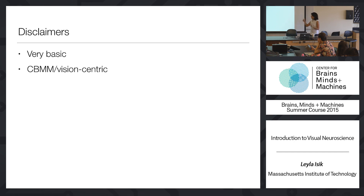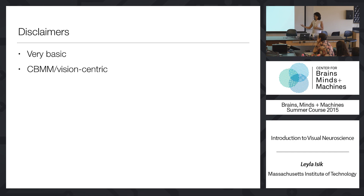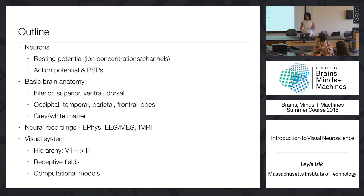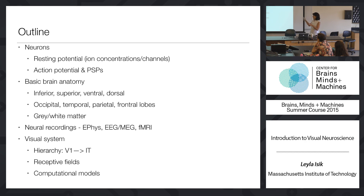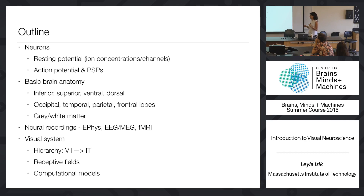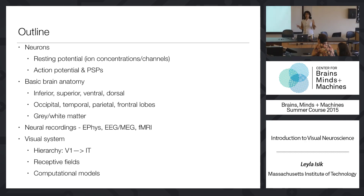My disclaimers are: one, it's very basic, and two, it will be CBMM and vision-centric, because the goal is to get you ready for the rest of this course. So please don't think that this is an exhaustive summary of basic neuroscience. The outline: first we'll talk about the basics of neurons and their firing, basic brain anatomy, how people measure neural activity both invasively and non-invasively, and then a brief rundown of the visual system.